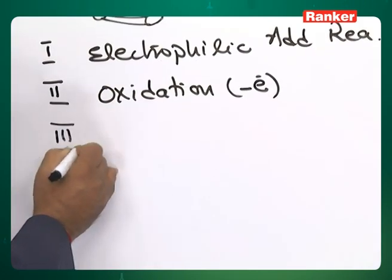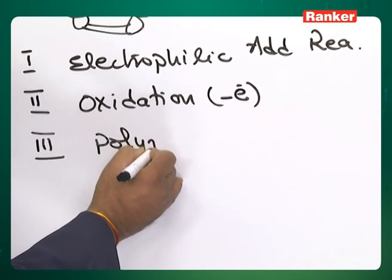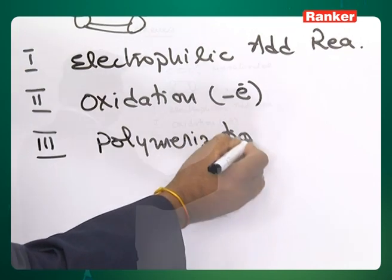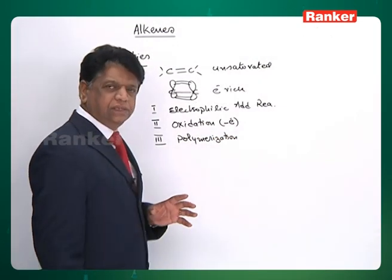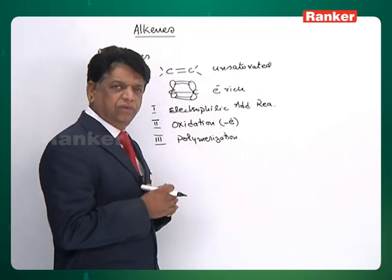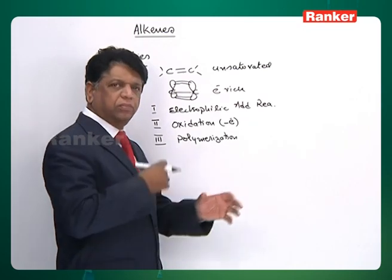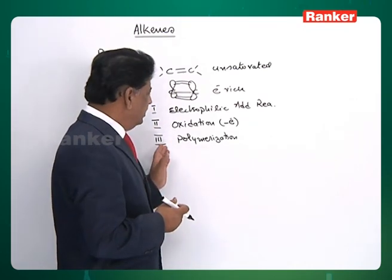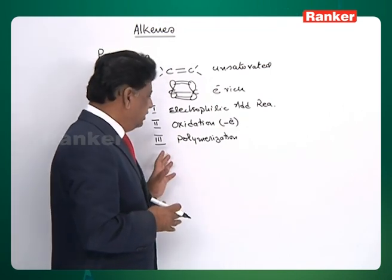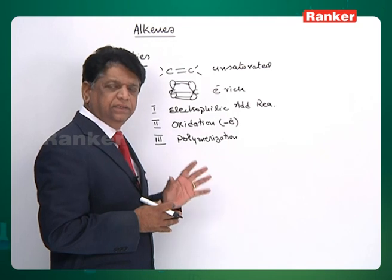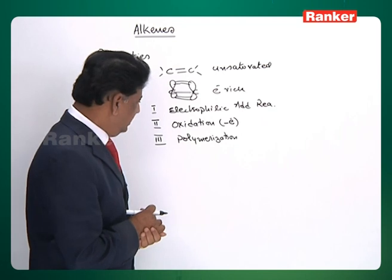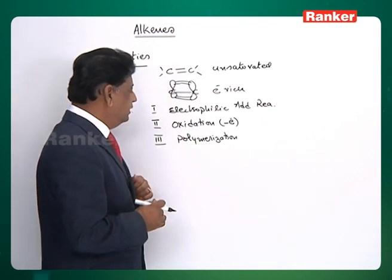Alkenes also undergo polymerization — this is the third characteristic reaction. The double bond unsaturation opens up and adds something. If nothing else is added, one compound adds onto another and finally results in big polymer formation. Starting materials are called monomers; for example, ethylene undergoes polymerization to give polyethylene.